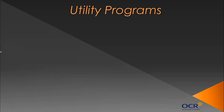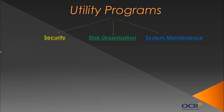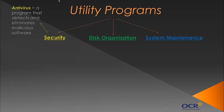This slide is all about utility programs. We need to look at three types: security, disk organization, and system maintenance. These are three genres of utility programs — programs that are used to help you in some way. Let's first look at security.